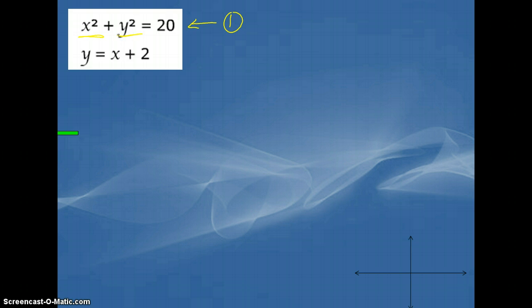So, when you have both an x-squared and a y-squared, we know that this is the equation for a circle. Okay, now the second equation is a linear equation. It's going to create a straight line.